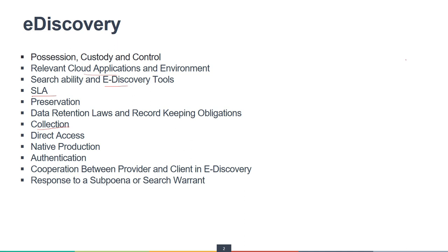Authentication is critical — if data cannot be authenticated, it cannot be considered admissible evidence in a court of law. The cloud does change how the chain of custody is ensured, so you need to maintain the chain of custody and have ways to authenticate evidence. Cooperation between the provider and the client in e-discovery is most important and must be agreed upon in the SLA and contract, including how to respond to search warrants.